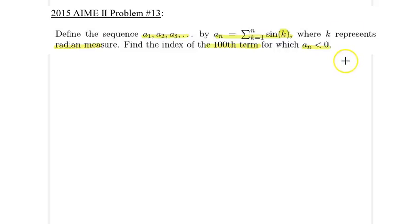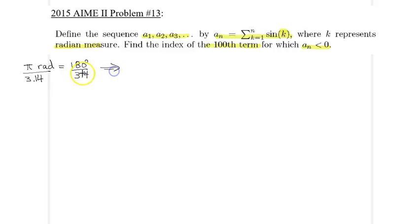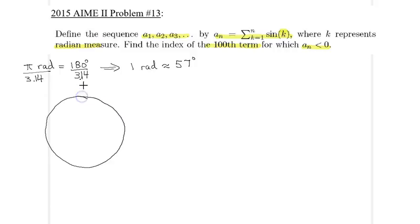We need to find the index of the 100th term for which a_n is less than zero. Let me remind you: π radians equals 180 degrees, so dividing both sides by roughly 3.14 implies that one radian is approximately 57 degrees. On the unit circle, the horizontal axis represents cosine and the vertical component represents the sine of the respective angle.